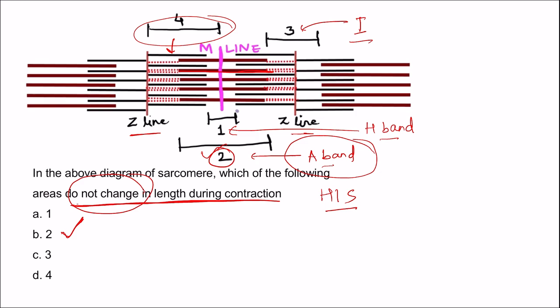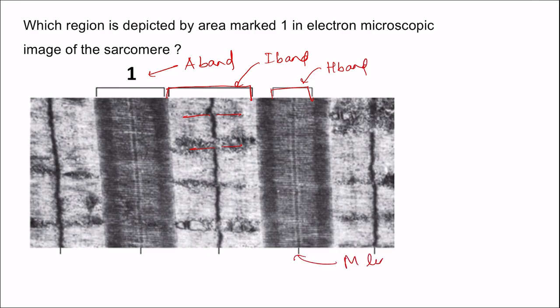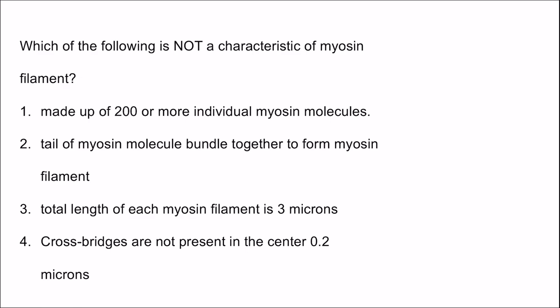Next question: which region is depicted by area marked one in the electron microscopic image of the sarcomere? Area one representing the entire thick filament is the A band. The marking on either side of the Z line is the I band. The third one is the H band, and the center one is the M line.